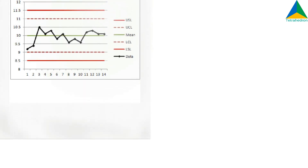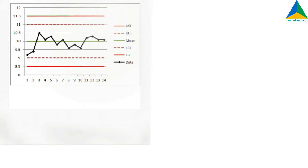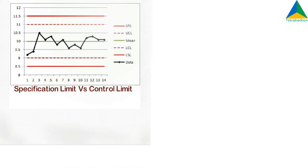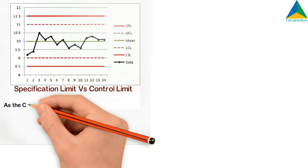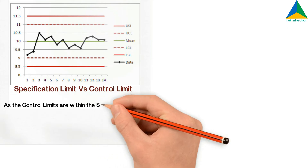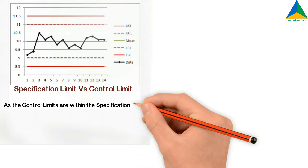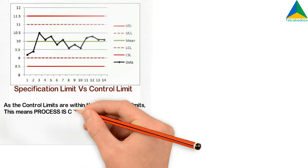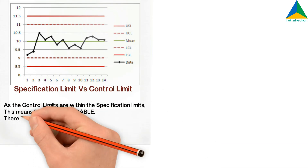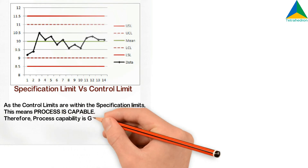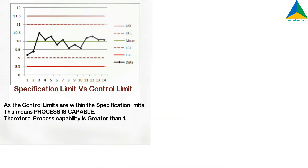As an example for understanding specification limits and control limits: here the control limits are within the specification limits. This means the process is capable; therefore, process capability is greater than 1.